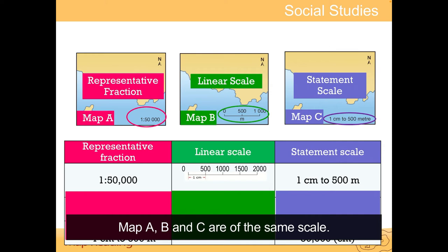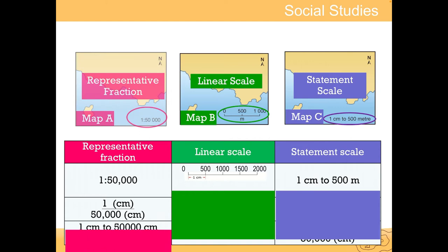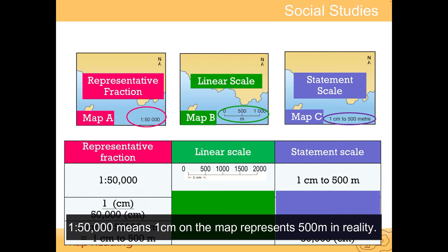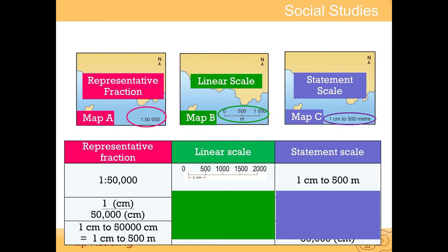Maps A, B and C are of the same scale. The scale of Map A is shown in numbers: 1 to 50,000 means 1 cm on the map represents 500 m in reality.